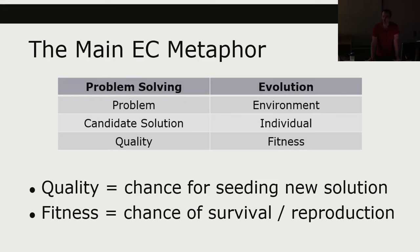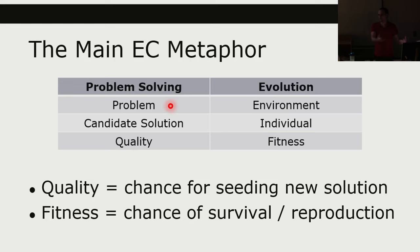Here is the analogy for evolutionary computation. On one side we have a problem-solving context — for example, a well-formed problem as we know it in this course. In natural evolution, that problem would be represented by the environment: organisms trying to survive on a mountain, underwater, near a volcano, and so on. So the problem is represented by the environment.